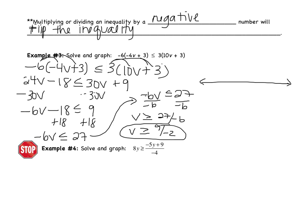So instead of less than, it becomes greater than. I have 27 divided by negative 6. Both are divisible by 3, so this becomes 9 over negative 2. So v is greater than or equal to negative 9/2. To graph, it's better to convert to a decimal: 9 divided by 2 is 4.5, and it's negative, so negative 4.5. I'll mark negative 5, negative 4, negative 3, etc. It's a closed circle at negative 4.5 — halfway between negative 4 and negative 5 — and shade to the right. Remember: you flip the inequality only when you multiply or divide by a negative number. Adding or subtracting a negative does not flip it.